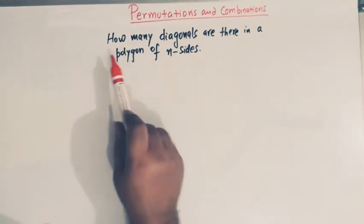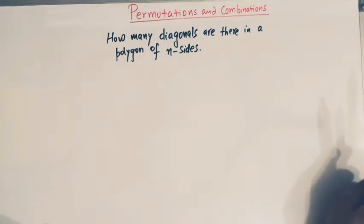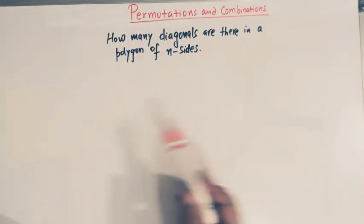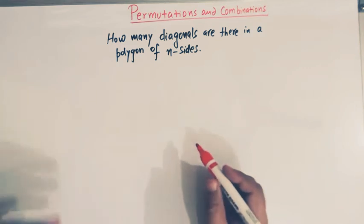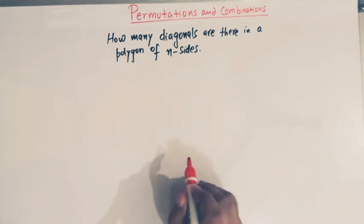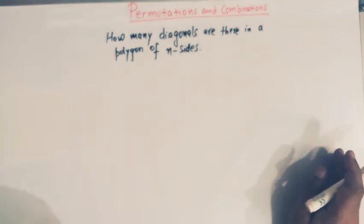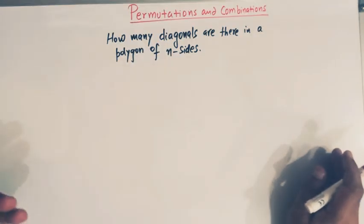The problem is: how many diagonals are there in a polygon of n sides? A polygon is a closed figure having n sides.